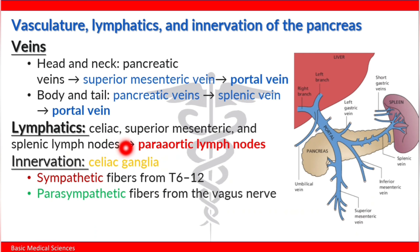The pancreas is innervated mainly from the celiac ganglia, where you find sympathetic and parasympathetic fibers. Sympathetic fibers are from T6 to T12 and parasympathetic fibers are from the vagus nerve. That concludes our video on the gross anatomy of the pancreas.